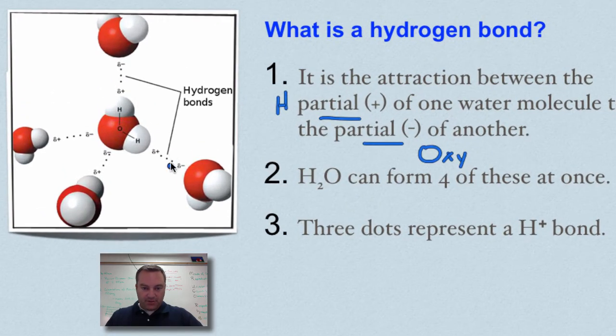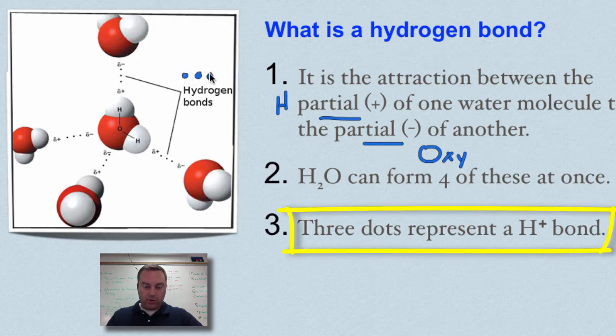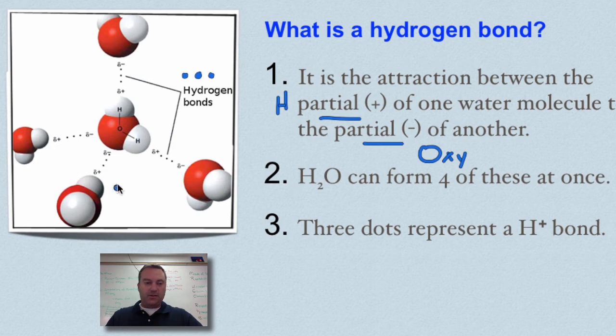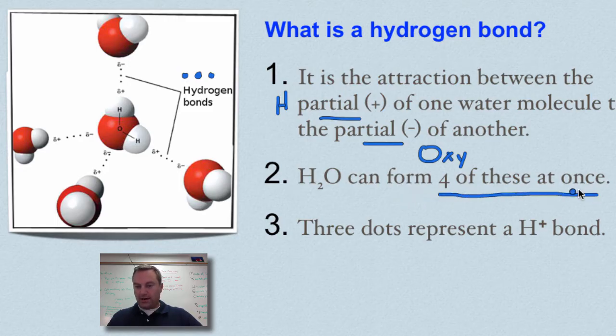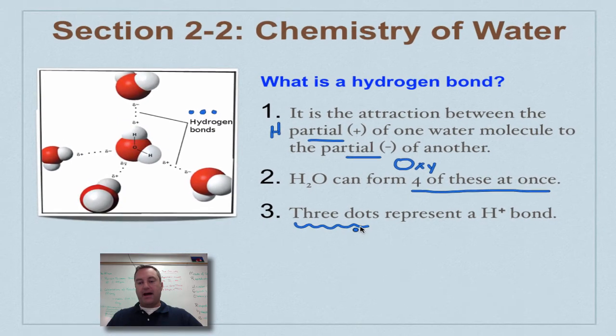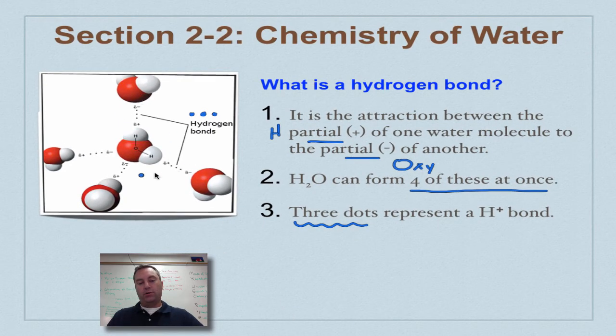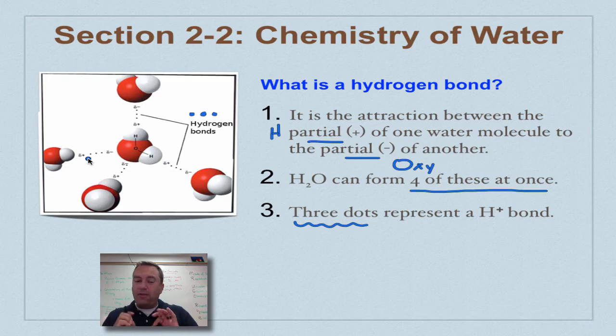So let's look over here in this picture. A hydrogen bond, as you can see right here, it's always formed by one, two, three dots. So notice this partial negative is attracted to this partial positive. This partial positive is attracted to that partial negative, so on and so forth. Now, the oxygen in reality actually has two partial negative parts to it. So that allows water to form four hydrogen bonds at once. And remember, three dots represent a hydrogen bond. So one, two, three, four. Remember, all the neat stuff that water can do is because of that polarity.